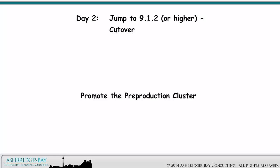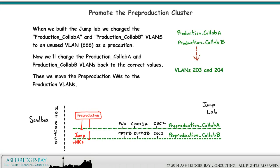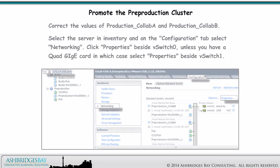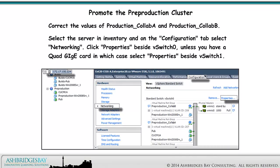And finally, we promote the pre-production cluster. When we built the Jump Lab, we changed the Production Collab A and Production Collab B VLANs to an unused VLAN as a precaution. Now we'll change them back to the correct values, then move the pre-production VMs to the production VLANs. Select the Server in Inventory and on the Configuration tab, select Networking. Click Properties beside vSwitch 0 — unless you have a Quagig eCard, in which case select Properties beside vSwitch 1.